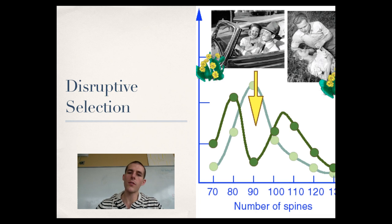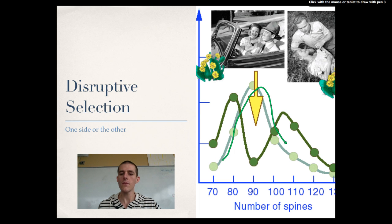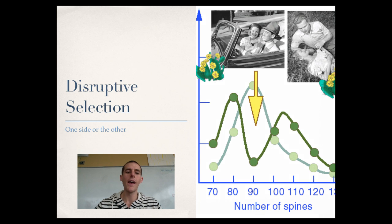Next up is disruptive selection. Here is our normal distribution. In disruptive selection, it is advantageous for the organism to be on one side or the other. So this one species of cacti may diverge into two versions, where one version, it is really advantageous to have fewer spines. The other version, it's more advantageous to have lots of spines. So in disruptive selection, the population essentially splits in two. You have half the population moving towards one extreme, while the other half moves towards the second extreme.